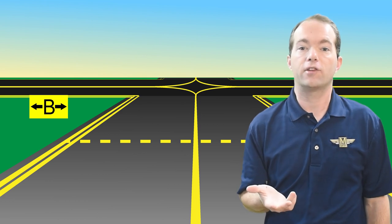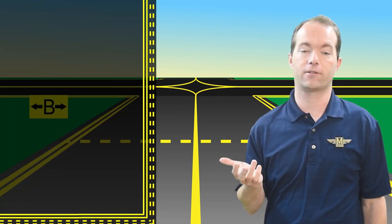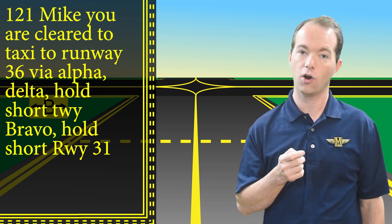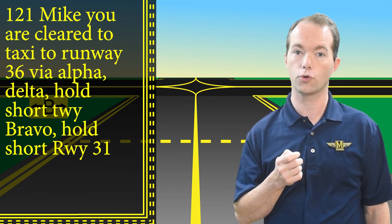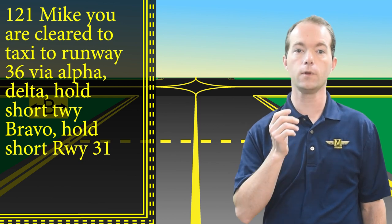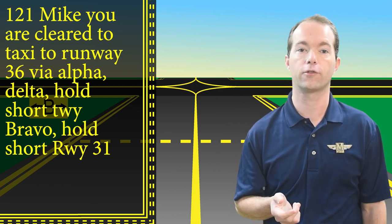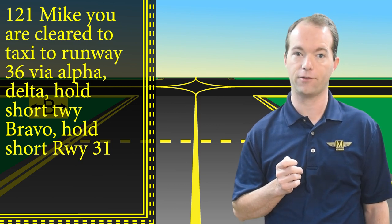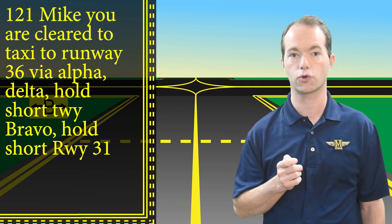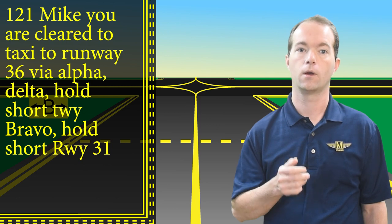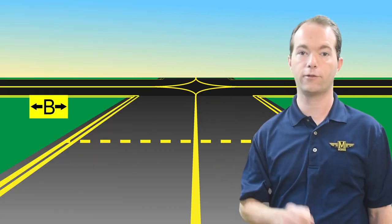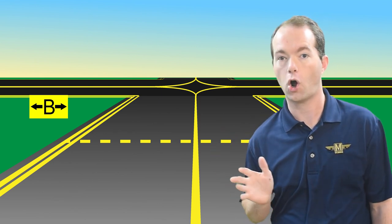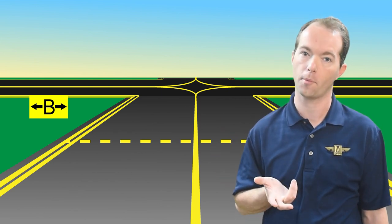An example taxi clearance might sound something like this: '1-2-1 Mike, you're cleared to taxi to runway 36 via alpha, delta, hold short taxiway bravo, hold short runway 31.' You'll read back those instructions: '1-2-1 Mike, cleared to taxi to runway 36 via alpha, delta, hold short taxiway bravo, hold short runway 31.' And you shall not cross the places where they told you to hold short until they tell you that you're cleared. Give them a call and tell them that you're holding short if you haven't heard from them in a while.